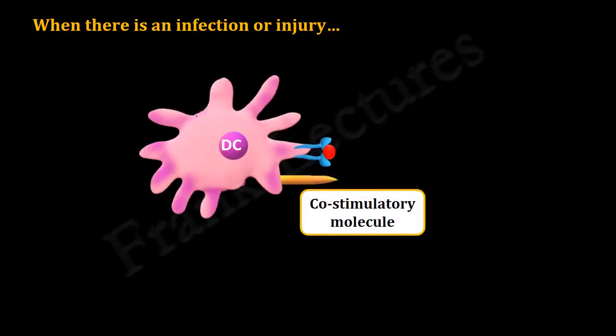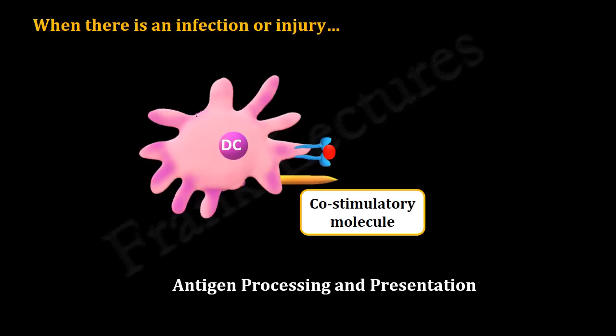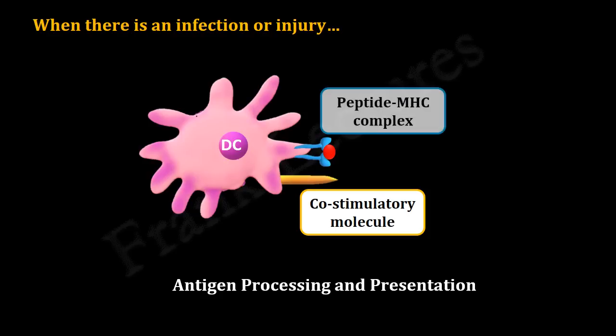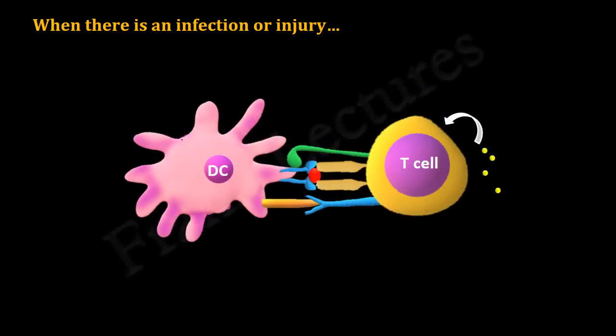Once activated, these dendritic cells collect the antigen from the site of infection, process them, and display them as peptide-antigen MHC complexes on their surface. They then migrate to the nearest secondary lymphoid tissue, such as a lymph node, and present these antigens to naive T cells.